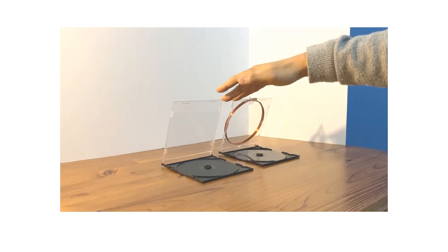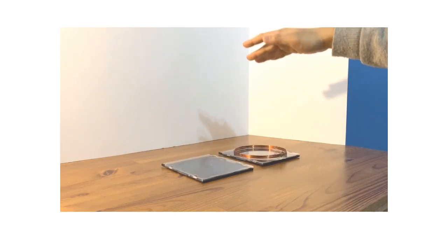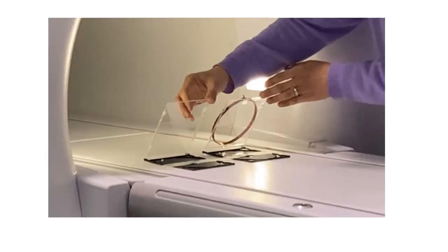We all know from the famous experiment of Galileo that all objects fall at the same speed regardless of their weight. Here are two DVD jackets. One is loaded with a copper coil, so its lid is much heavier. When they are released together, they fall, indeed, at the same time.